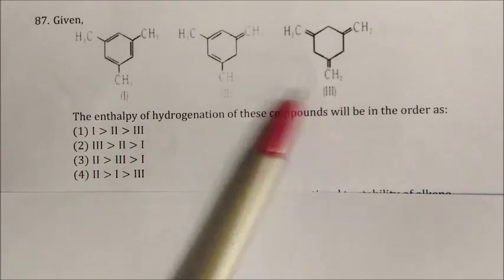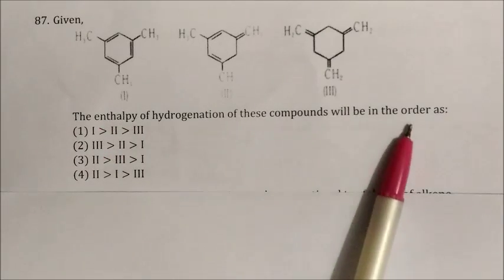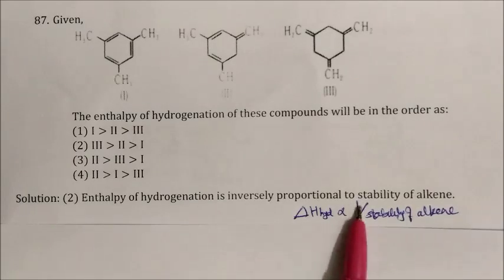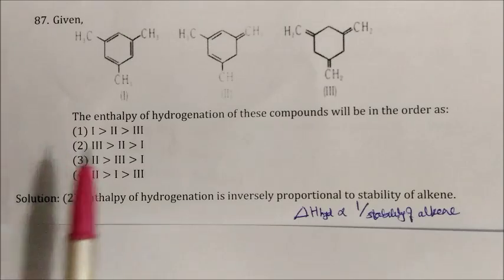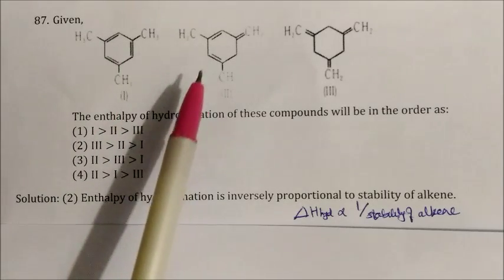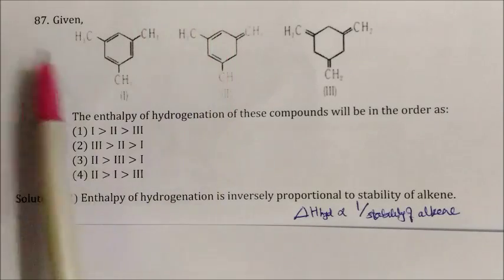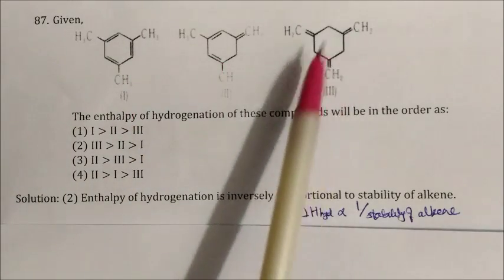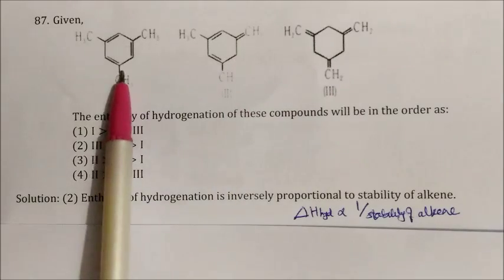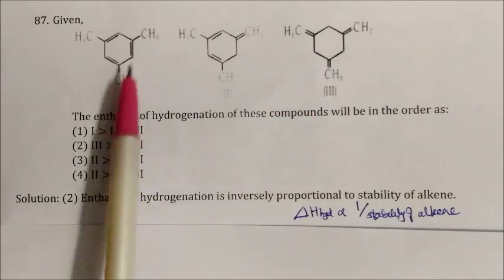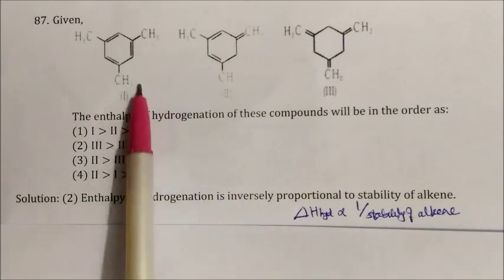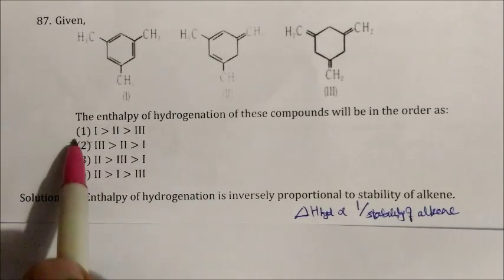Question: For three compounds, find the order of enthalpy of hydrogenation. Enthalpy of hydrogenation is inversely proportional to the stability of the alkene. Compound 1 is aromatic — most stable, least heat of hydrogenation. Compound 2 has conjugated double bonds — intermediate stability. Compound 3 has no conjugation — least stable, maximum heat of hydrogenation. So the order is: ΔH₃ > ΔH₂ > ΔH₁. Answer: option 2.